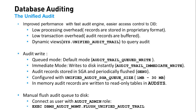Beginning with 12c, to support the unified audit trail, Oracle has introduced two additional named queues in the SGA. These queues record audit activity in memory. Both queues are used in a round-robin fashion so that when the first queue becomes full, a background process will write the audit records into the AUD_SYS schema tables. The queue size can be defined by the UNIFIED_AUDIT_ASYNCHRONOUS_QUEUE_SIZE parameter, with a value in the range of 1MB to 30MB, allowing you to tune the auditing activity.